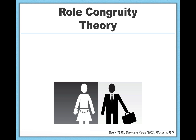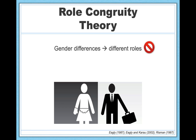Role congruity theory proposes that people observe men and women in their social roles and from those observations draw conclusions about the characteristics of men and women. So it's not that innate biological gender differences lead to people engaging in different roles, but rather that the different roles people engage in lead to observed gender differences. It's the order of operations that differs here. Gender differences don't lead to different roles, but rather different roles lead to gender differences.